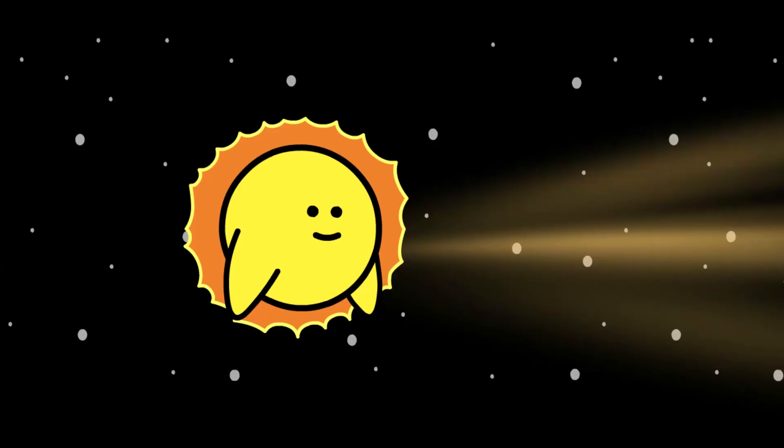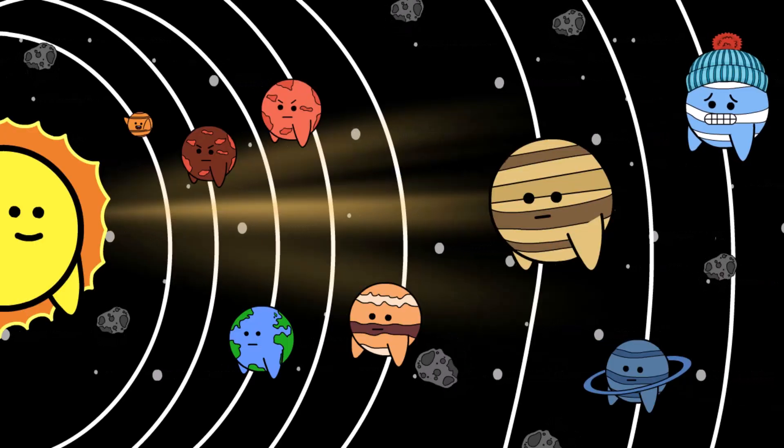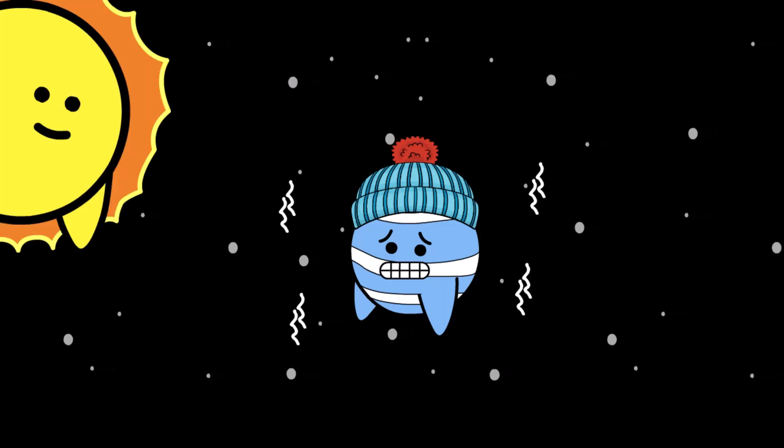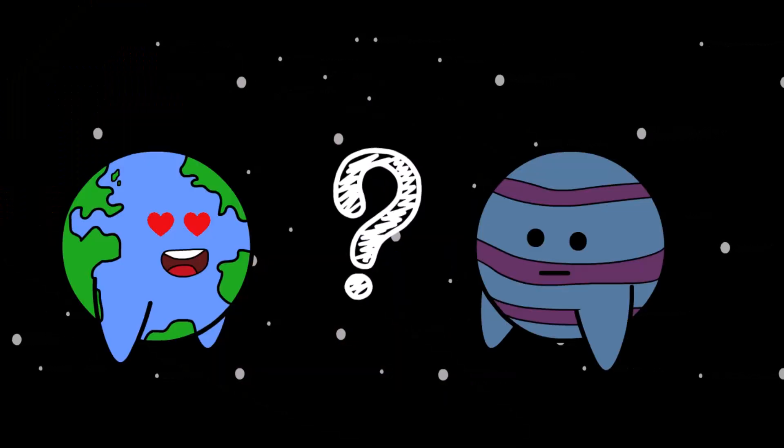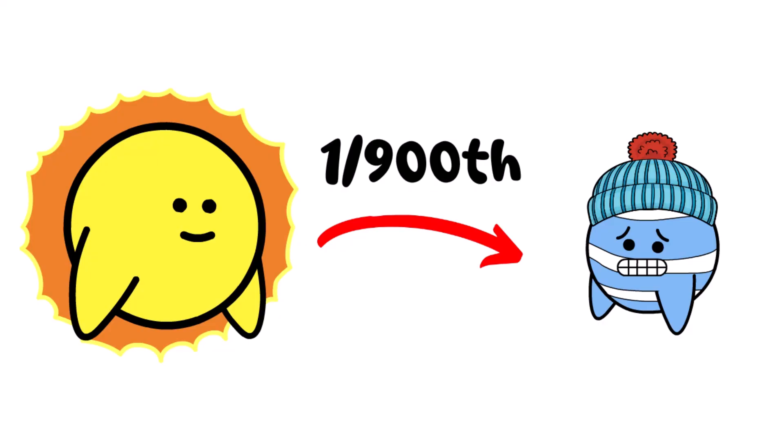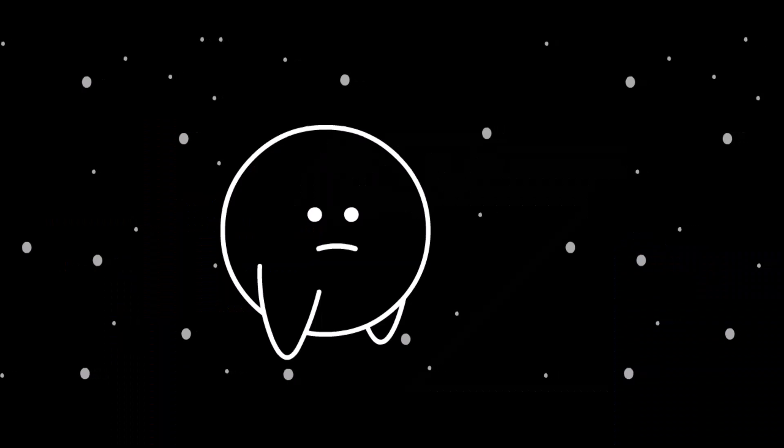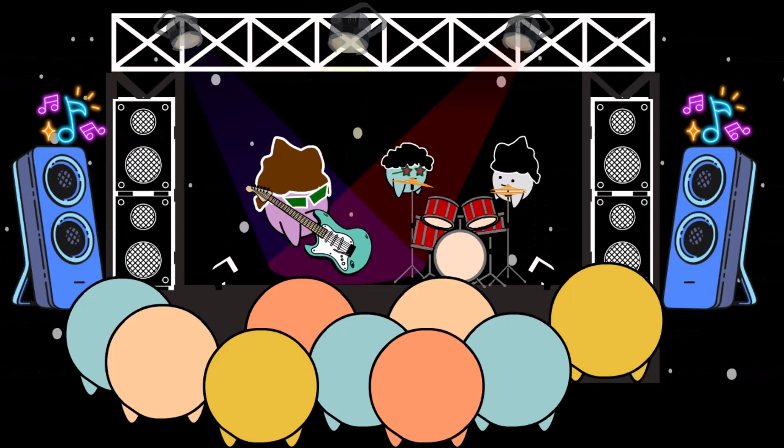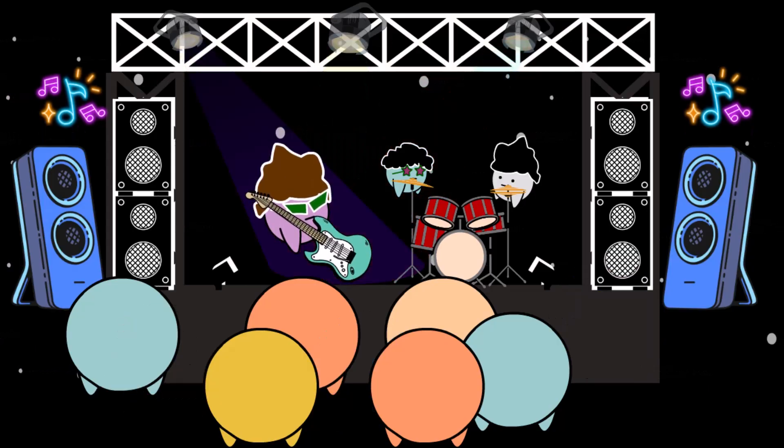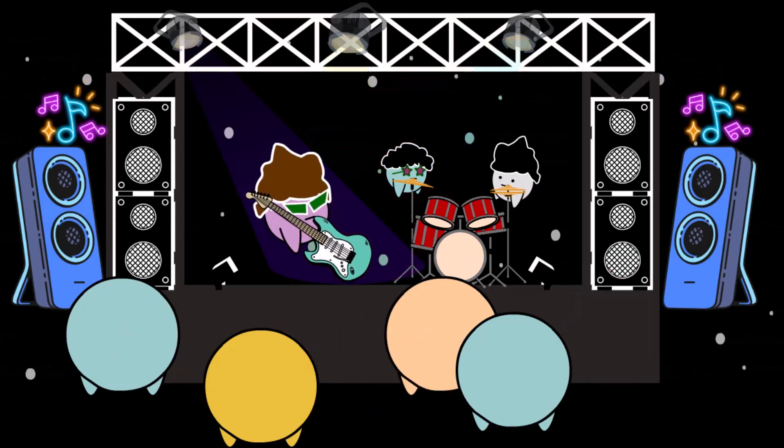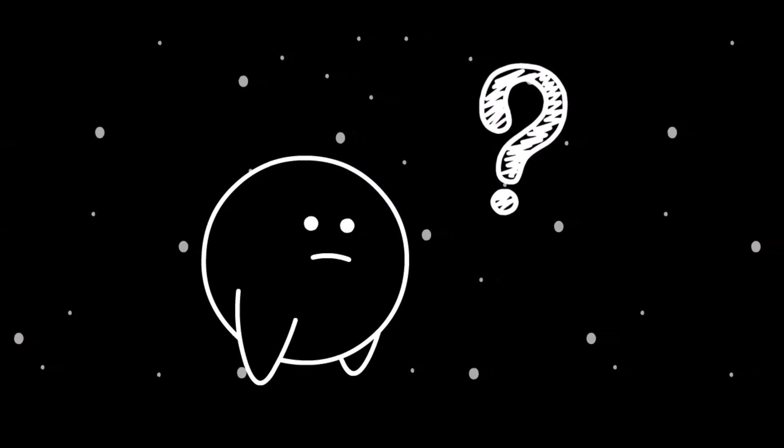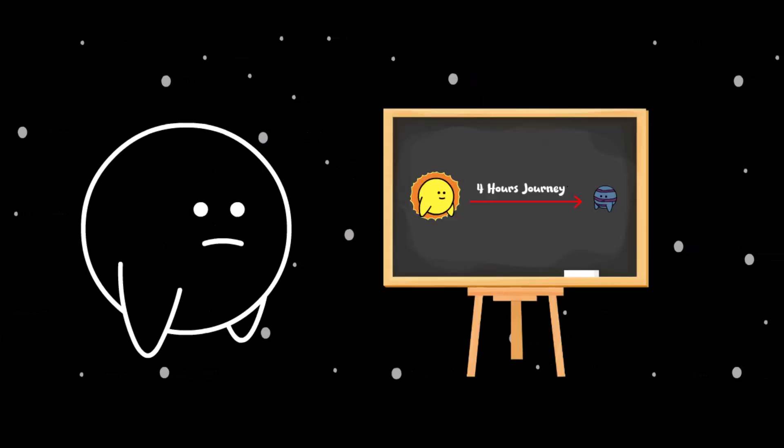The Sun basically treats Neptune like it forgot it ever existed. While planets like Mercury and Earth are basking in warmth and soaking up solar attention, Neptune's out there, alone, freezing, and barely getting noticed. Neptune only receives about one nine-hundredth of the sunlight that Earth does. It's like being at a party where the DJ only plays your favorite song once at the very end, after most people have already left. The sunlight that powers life on Earth takes over four hours to reach Neptune.